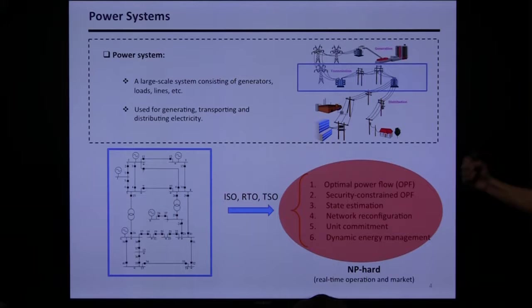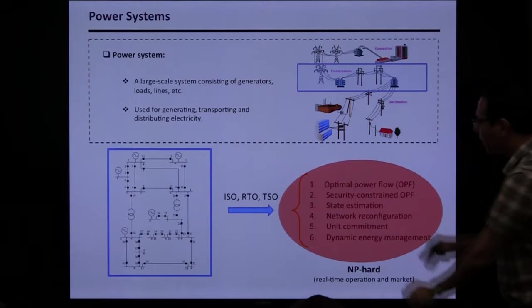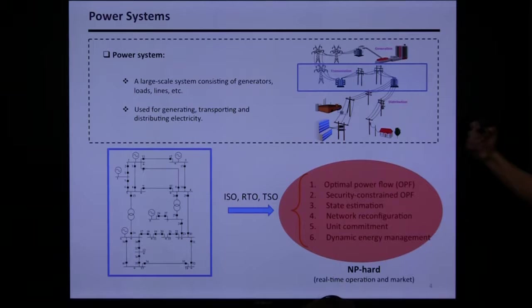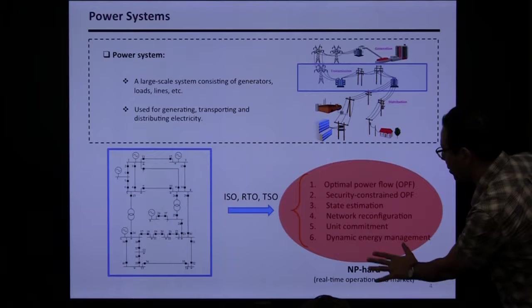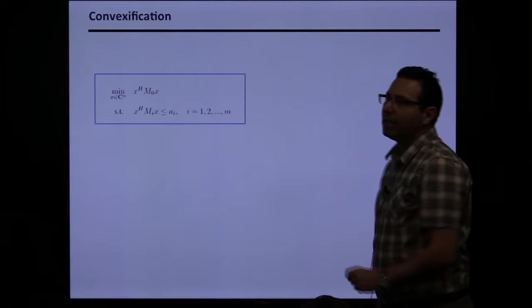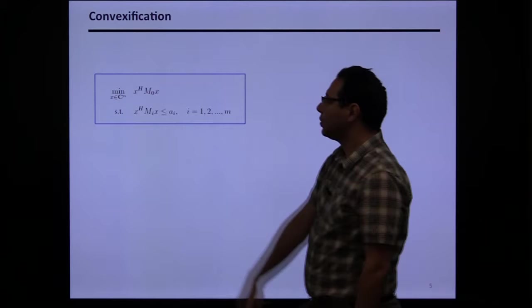This is a system where we need to match millions of consumers with thousands of producers. These problems are really hard to solve — they're strongly NP-complete for both real-time operation and electricity markets. All these problems are built upon laws of physics called power flow equations. The question is how can we solve them?